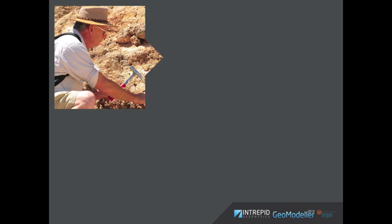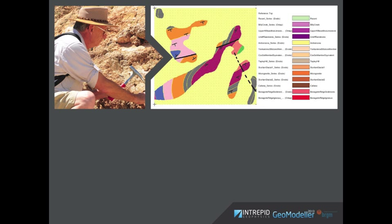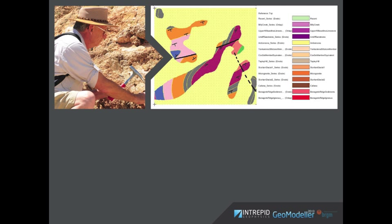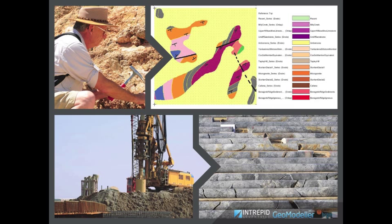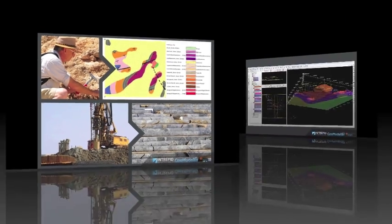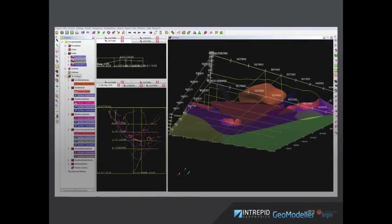Building a 3D model begins with entering the available geological data, typically from field mapping and boreholes, and deciding on the stratigraphic relationships between the units within the model. From this input, Geomodeller will generate a model which honors all the observations.